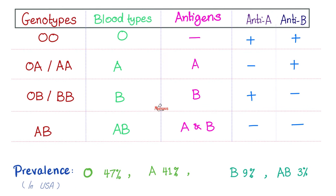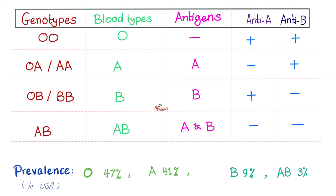If your genotype is OO, your phenotype is blood group O. Do you have any antigens? No — you're zero, you have no antigens. Therefore, you have never seen A before — that's why you have an antibody against it. You have never seen B before — you already have an antibody against it. So your blood does not have antigens, but it does have antibodies.